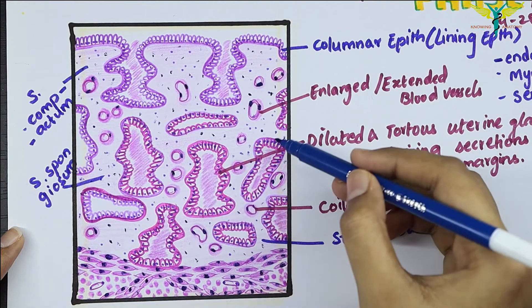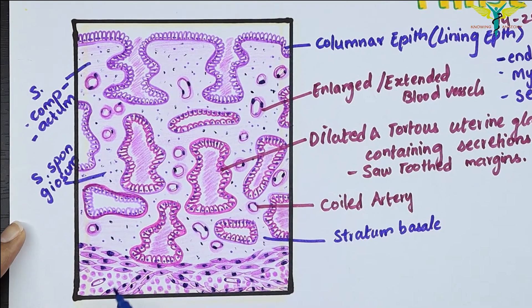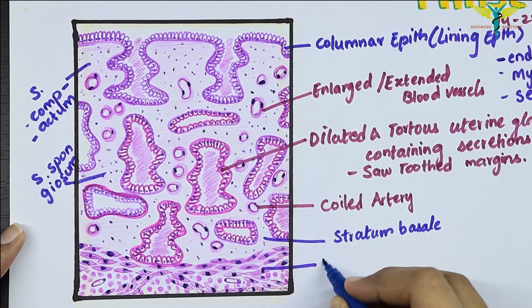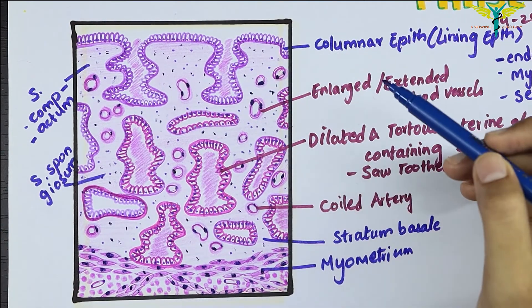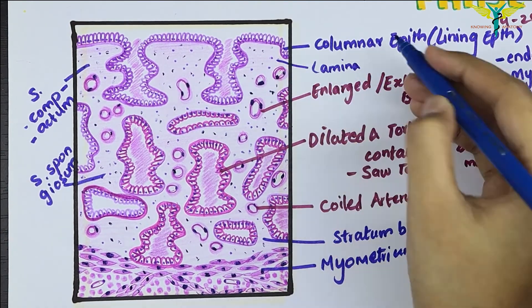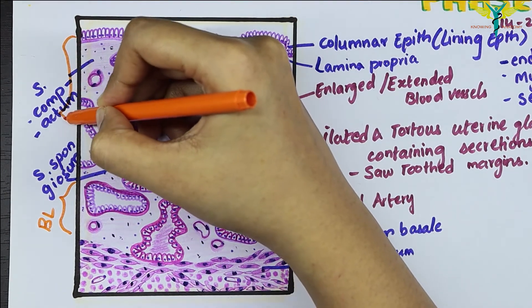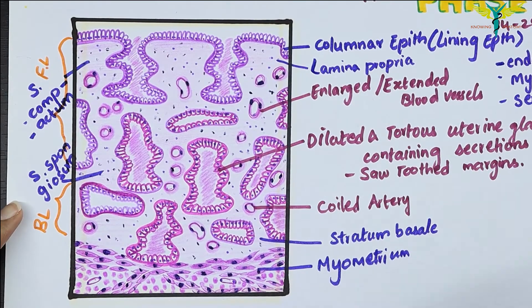You can see the enlarged uterine glands here, and these are the secretions. This is the myometrium layer, which contains many smooth muscle cells and some arteries inside. This whole area is the lamina propria of the endometrium, and this is the basal layer, whereas from here to here is the functional layer.